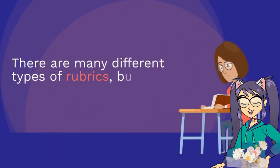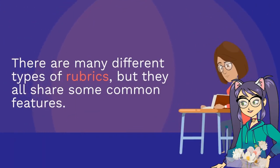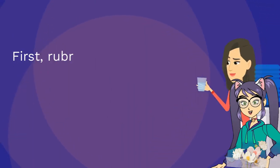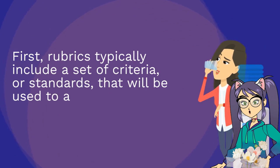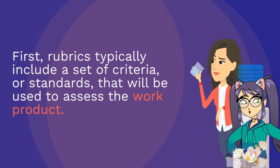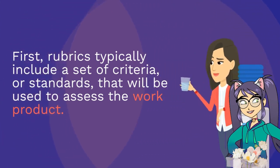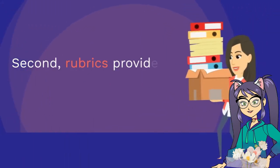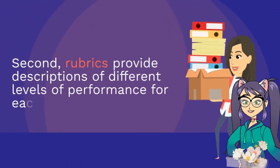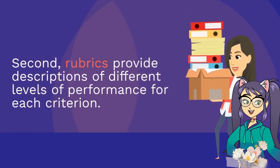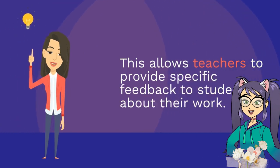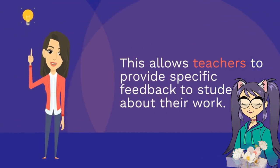There are many different types of rubrics, but they all share some common features. First, rubrics typically include a set of criteria or standards that will be used to assess the work product. Second, rubrics provide descriptions of different levels of performance for each criterion. This allows teachers to provide specific feedback to students about their work.